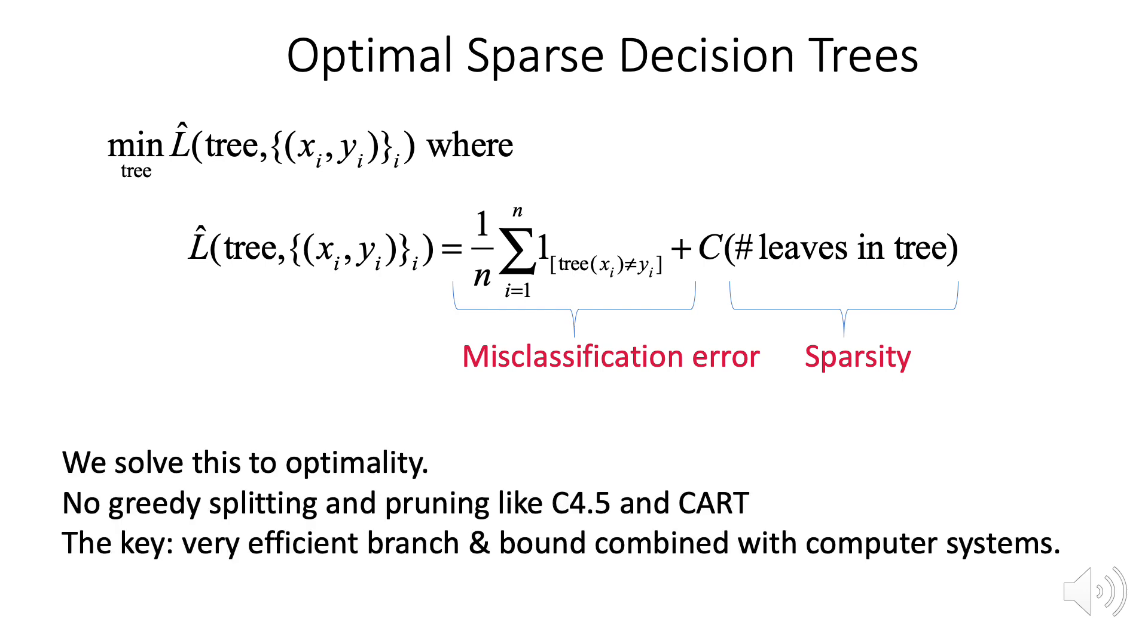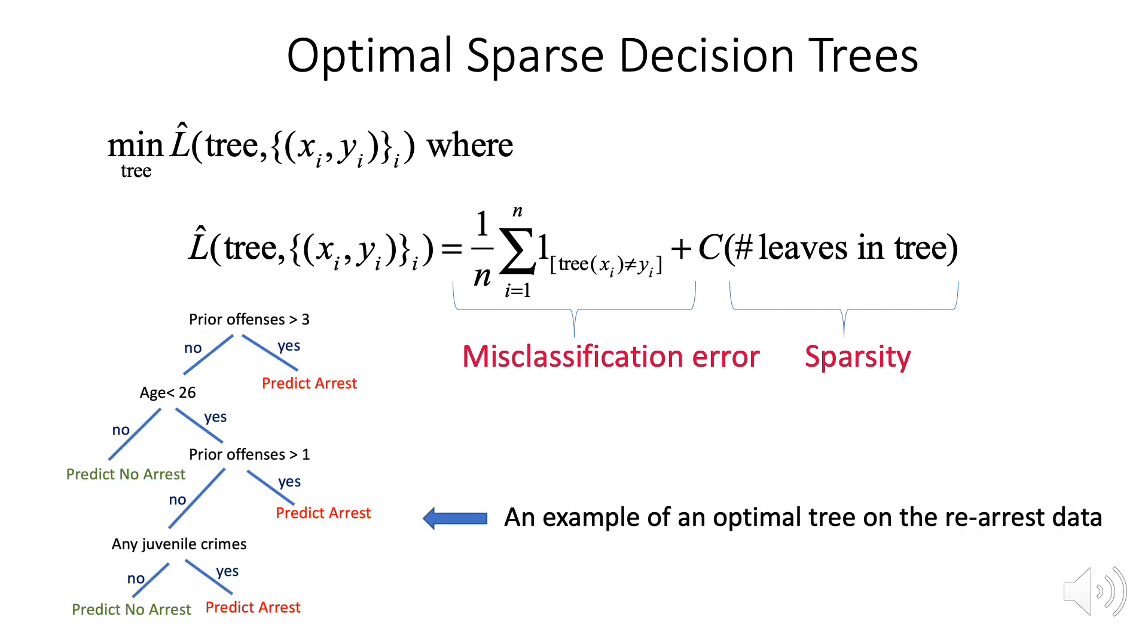Instead, we developed a specialized branch and bound method to solve the problem to optimality, leveraging computational caching. And when we solve it to optimality, we get sparse accurate trees, like this one on the Florida Rearrest data.